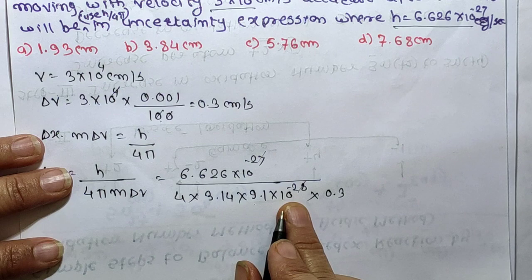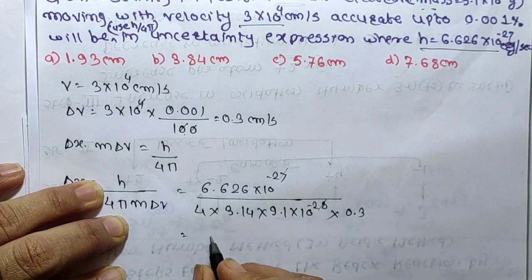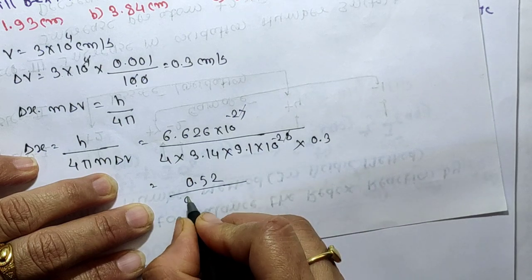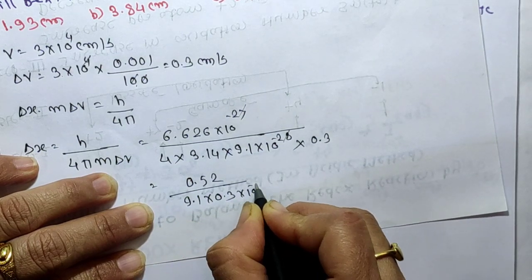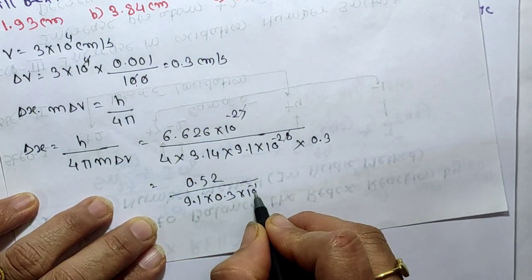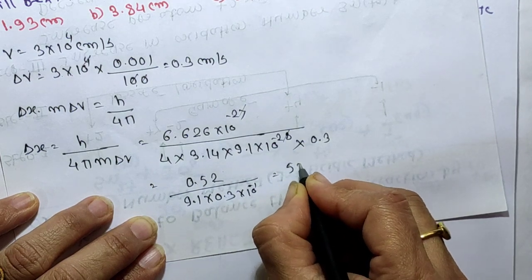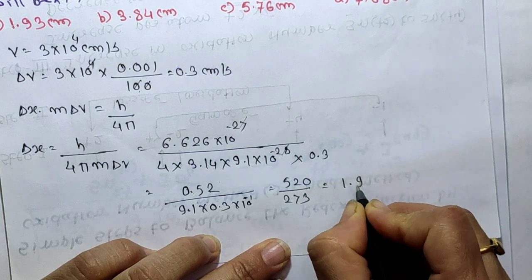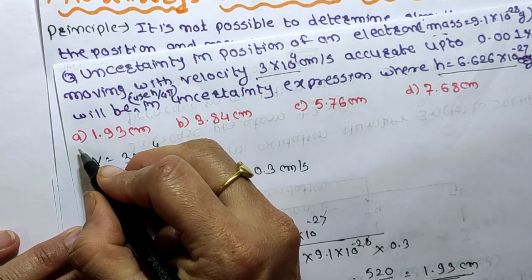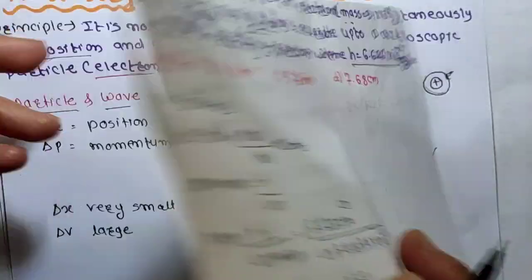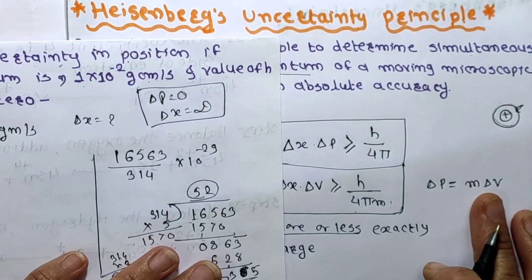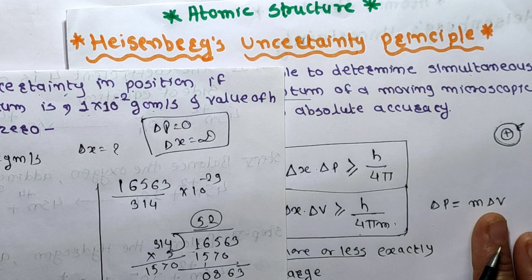Continuing the calculation: we have 0.52 from prior calculation divided by 9.1 into 0.3 into 10 raise to 1, which simplifies to 520 divided by 273, giving approximately 1.93 cm. That is option number 1 and is our right answer. In this way, we can solve questions on uncertainty principles. I hope you understand Heisenberg's Uncertainty Principle and the related questions. Please like, share, and subscribe to my YouTube channel. Thank you.